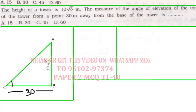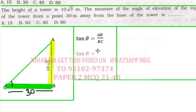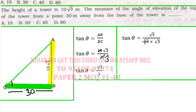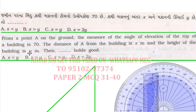Opposite and adjacent sides give us tan. So tan θ = AB/BC = 10√3 / 30. That simplifies to √3/3. Since this value isn't directly in the trigonometric table, I multiply √3/√3 to get 1/√3. From the table, tan 30° = 1/√3, so θ = 30°.